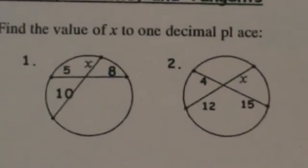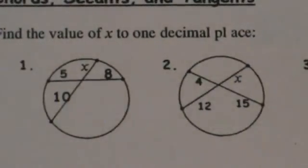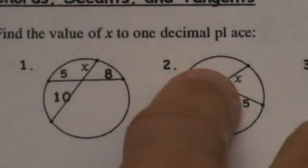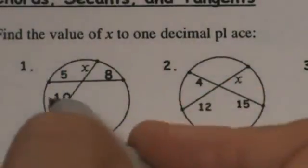So those are the four cases: tangent-tangent, chords on the inside, secant-secant, and secant-tangent on the outside. Keep these formulas handy as they will fall into those categories. Now let's go through some practice problems. The first one is a chord-chord problem — we have two chords, so we take 5 times 8 and set it equal to 10 times the unknown.